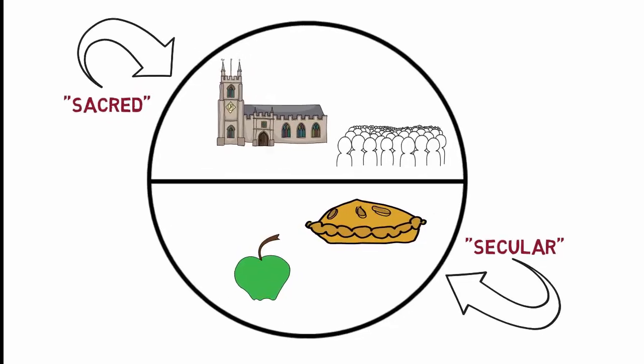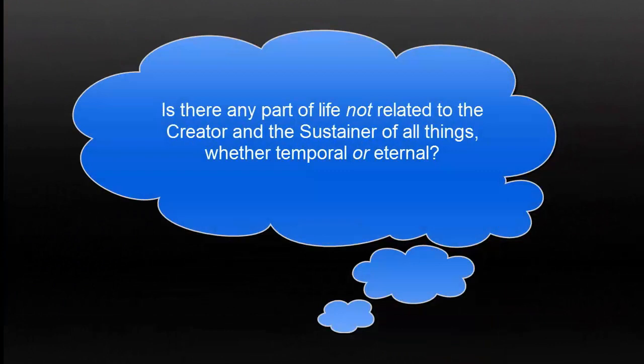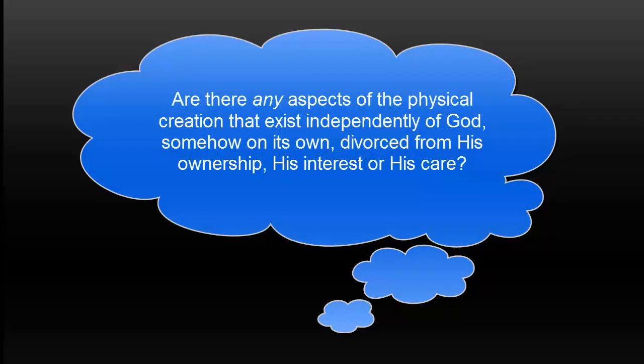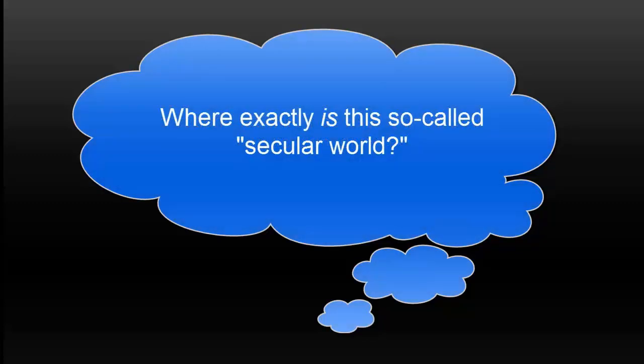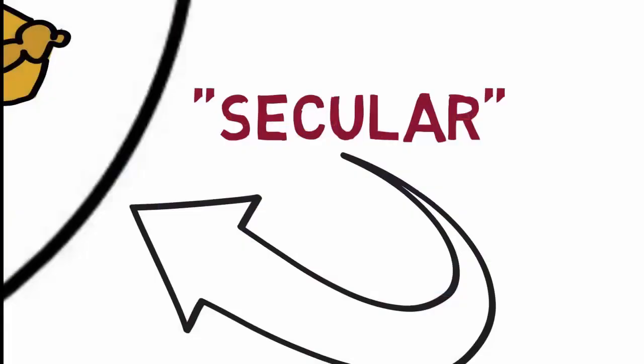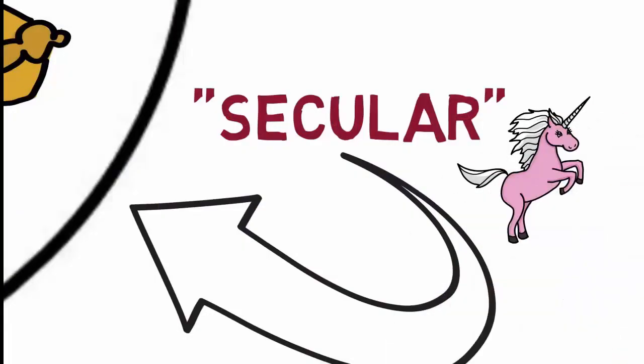But we need to think again about this faulty big picture. Could it be a mental trap? Ask yourself: is there any part of life not related to the creator and the sustainer of all things, whether temporal or eternal? Are there any aspects of the physical creation that exist independently of God, somehow on its own, divorced from his ownership, his interest, or his care? And where exactly is this so-called secular world anyway? Fact is, it doesn't exist. Yet, we have talked about it for so long, we think it's really there.